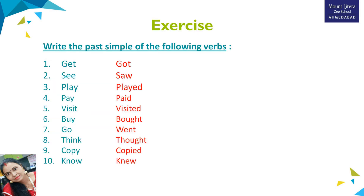Now, on the basis of your understanding about the simple past tense, let's do one exercise. In this exercise you have to write the past simple form of the following verbs. Number one: 'get' — past simple form is 'got.' Number two: 'see' — answer is 'saw.' Number three: 'play' — past form is 'played.'